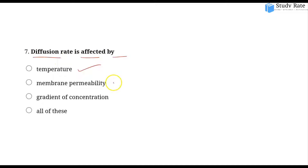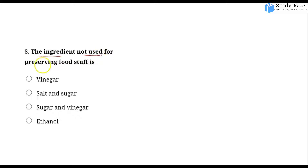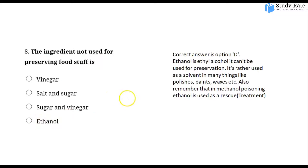The seventh question: What affects diffusion rate? Temperature, membrane permeability, concentration gradient — all of these affect diffusion rate. Also, salt and sugar are used — sugar and vinegar are both used as ingredients to preserve food.